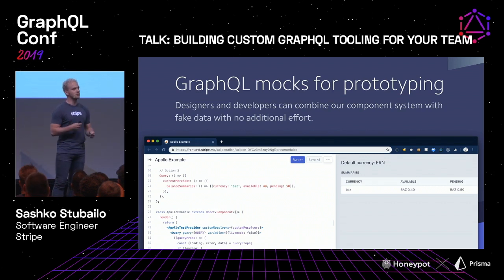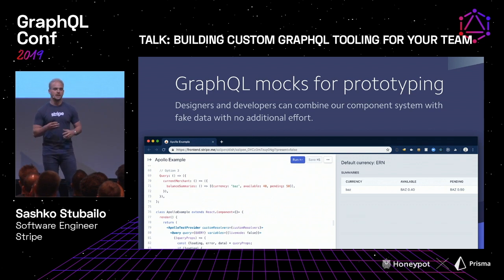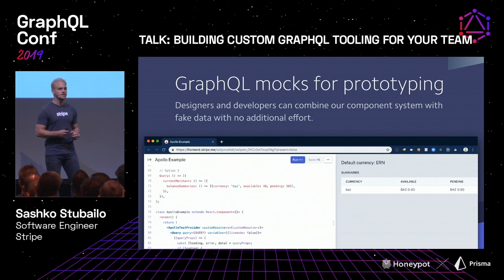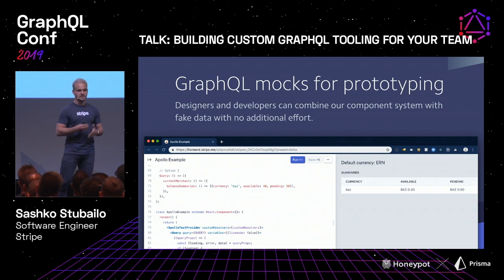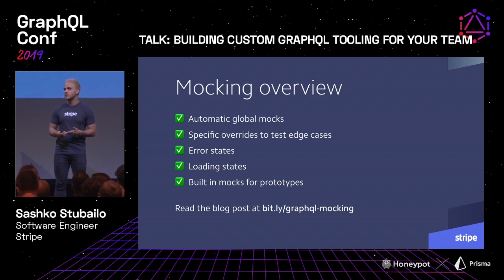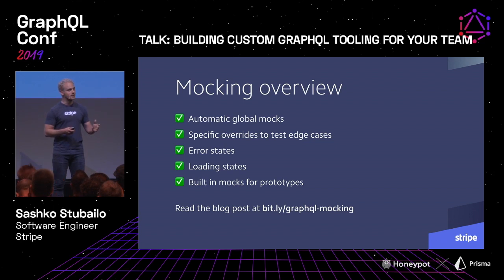We also have an internal prototyping tool we call SailPen, which is kind of like CodePen but for our internal component system. You can import any of our React components and directly in your browser prototype any kind of UI you might build in the Stripe dashboard. We've built GraphQL mocking right into that, so you can import our component system and our GraphQL schema and prototype a whole feature right there in your browser. That's been hugely impactful, not just for developers, but for designers in our organization. If you want to read more, we published a blog post about that recently.